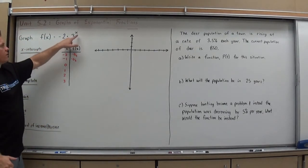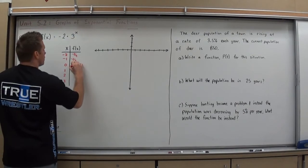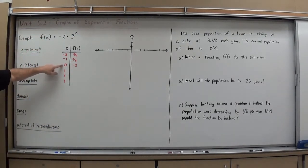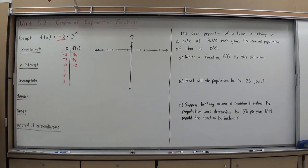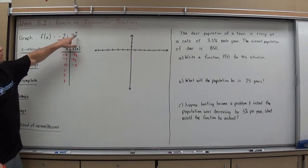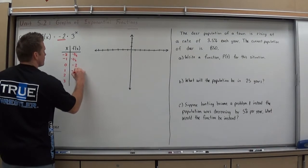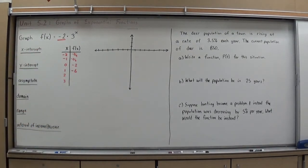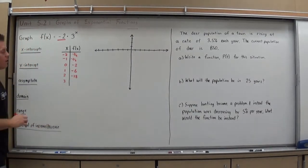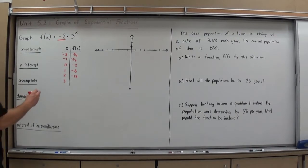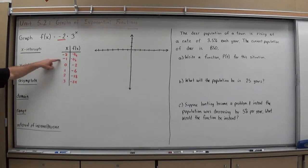Plug in a 0. Anything to the 0 power is 1. 1 times negative 2 is negative 2. Now, that's an important point because when we plug in a 0 for x, we get our y-intercept. So, our y-intercept is negative 2, which is also our starting value in a geometric sequence. So, we have found the y-intercept right now. That's good news. Plug in a 1. 3 to the 1 is 3. 3 times negative 2 is negative 6. Plug in a 2. 3 squared is 9 times negative 2 is negative 18. And then 3 cubed is 27. 27 times negative 2 is negative 54.